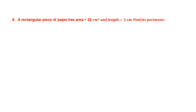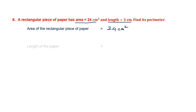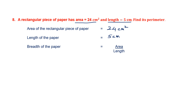Question 8. A rectangular piece of paper has area given to us. Here area is given to us and length is given to us — we have to find its perimeter. Area of the rectangular piece of paper is 24 cm squared. The length of the paper given to us is 5 cm. We have to find the breadth, and the formula is area divided by length, because we need length and breadth to find the perimeter.